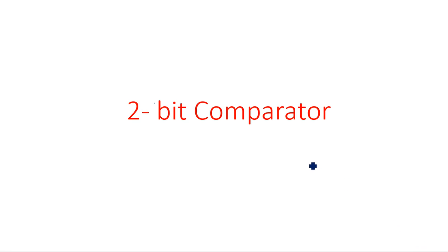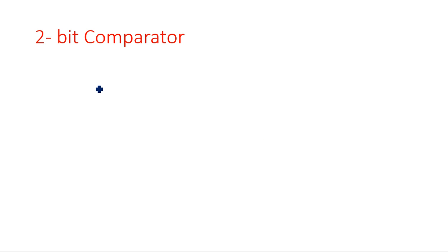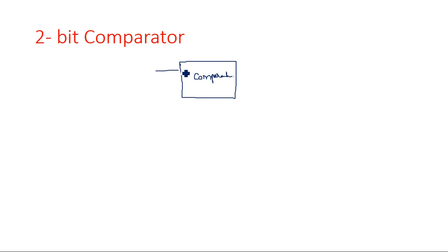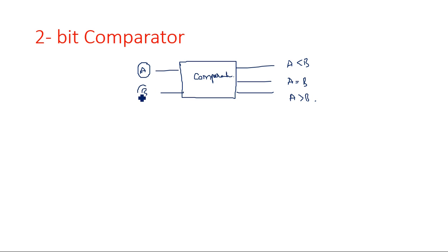Hi everyone. In this video I am going to explain about the 2-bit comparator. In the last video I gave you the introduction of the comparator and how to design a 1-bit comparator using AND gates and XNOR gates. The 2-bit comparator consists of two bits in each input. A comparator has two inputs and three outputs — A less than B, A equal to B, and A greater than B. Depending upon the number of bits inside A and B, we decide the name: 1-bit comparator, 2-bit comparator, or n-bit comparator.